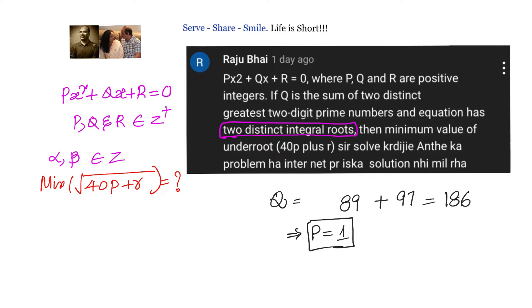We have been given that two distinct integral roots are there. In that scenario, I know that p should be equal to 1. So our equation looks like x² + 186x + r = 0.